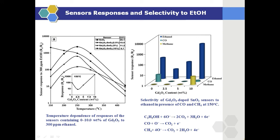The reason of increasing the selectivity toward ethanol is that the sensor releases more electrons upon exposure to ethanol rather than carbon monoxide or methane. Therefore, the sensor shows high responses toward ethanol.